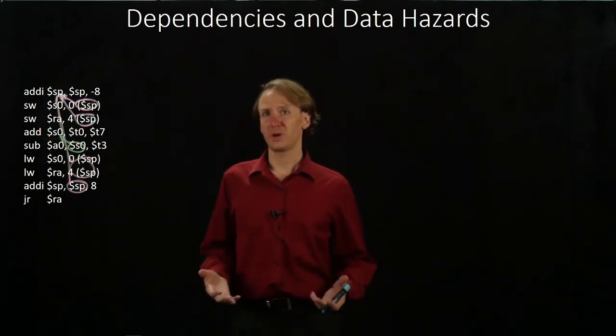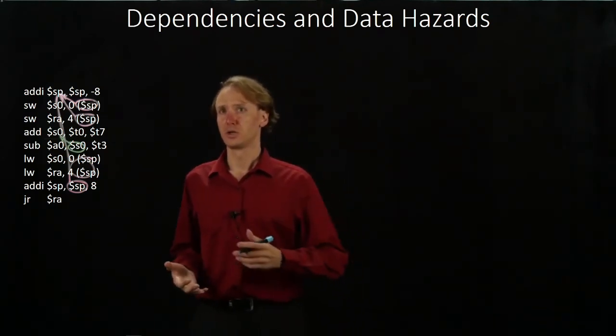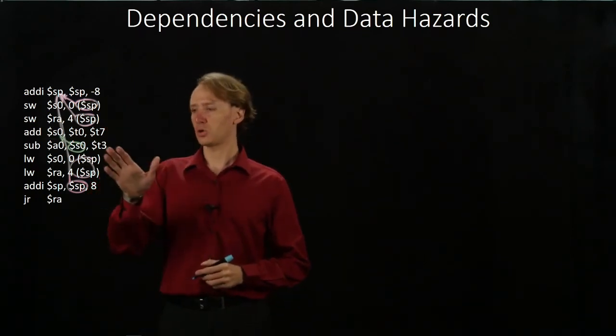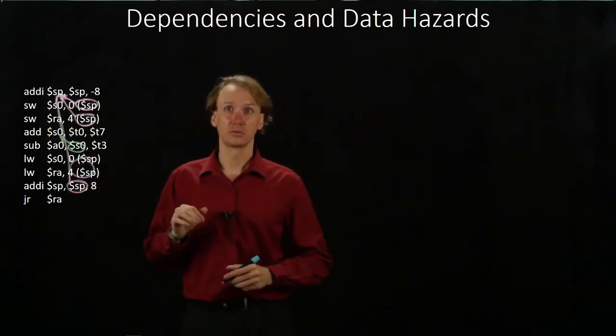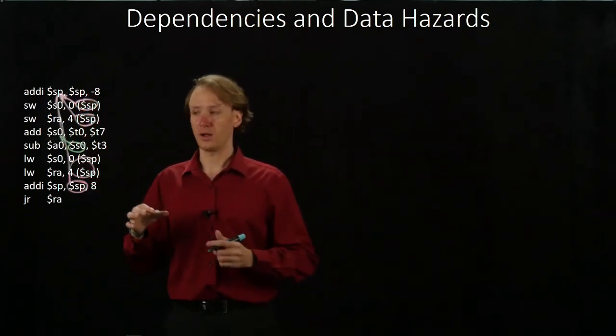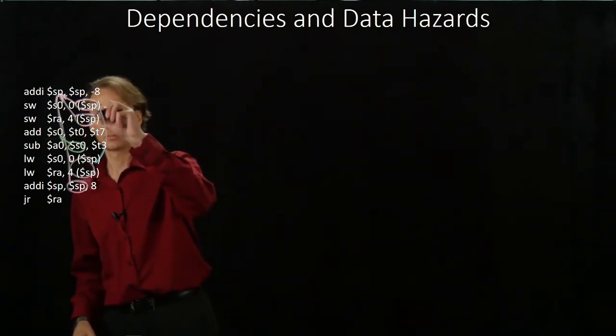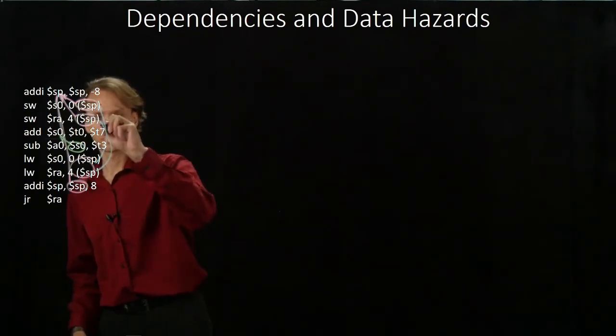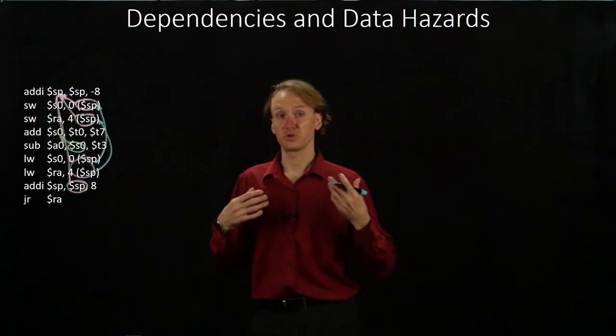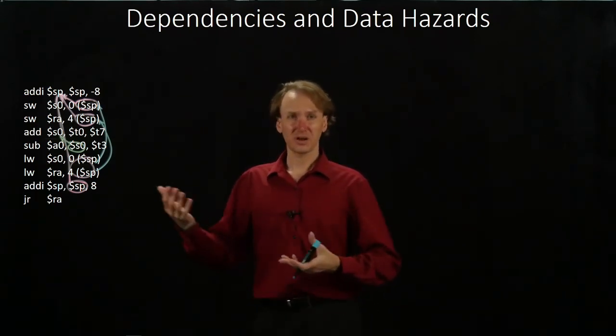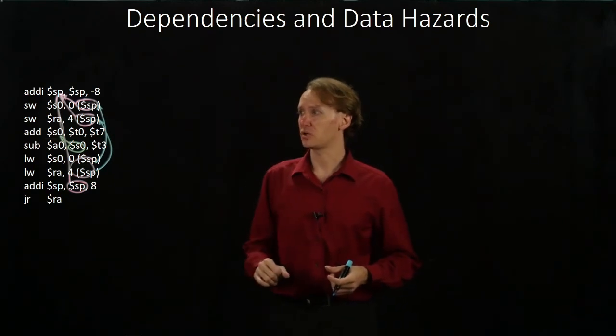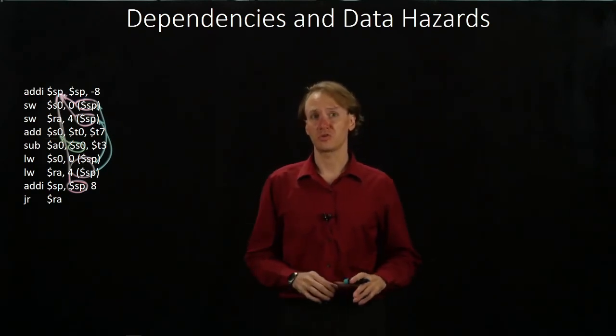We also have a couple of dependencies with memory. We have two cases where we're updating a memory cell and then we're going to read that data back out later. So we actually have dependencies there as well. These dependencies won't actually turn out to produce hazards for us but they are technically there. In some architectures this might give us trouble but we won't have to worry about them for ours.